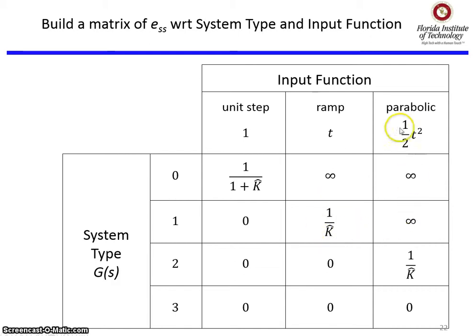And in a rare case, your system has to track some parabolic input, and you've got to be type 2 or higher, otherwise you're going to have infinite error. And if you're type 2, you're going to want k-hat to be very, very large to make the steady-state error small.